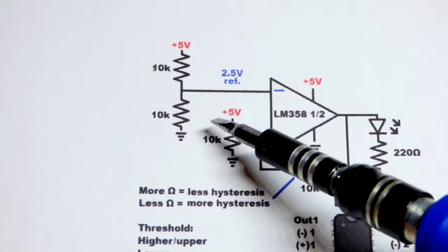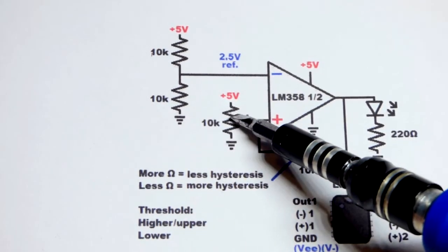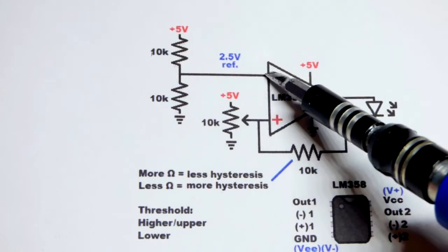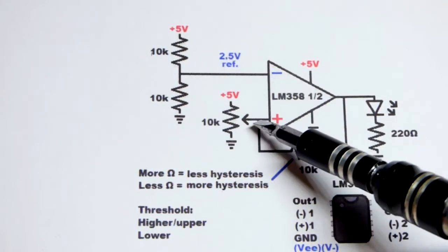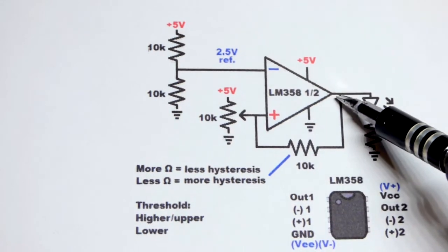We could have made it where the threshold was the voltage we saw, if we had our signal at the inverting input and our fixed voltage at the non-inverting input. But then the output would have been inverted.